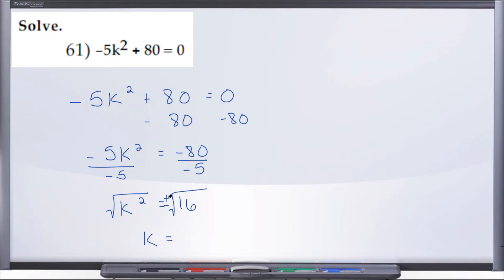What is radical 16? Radical 16 is 4, so we have plus and minus 4. So k equals plus and minus 4. We could have done this a couple other ways.